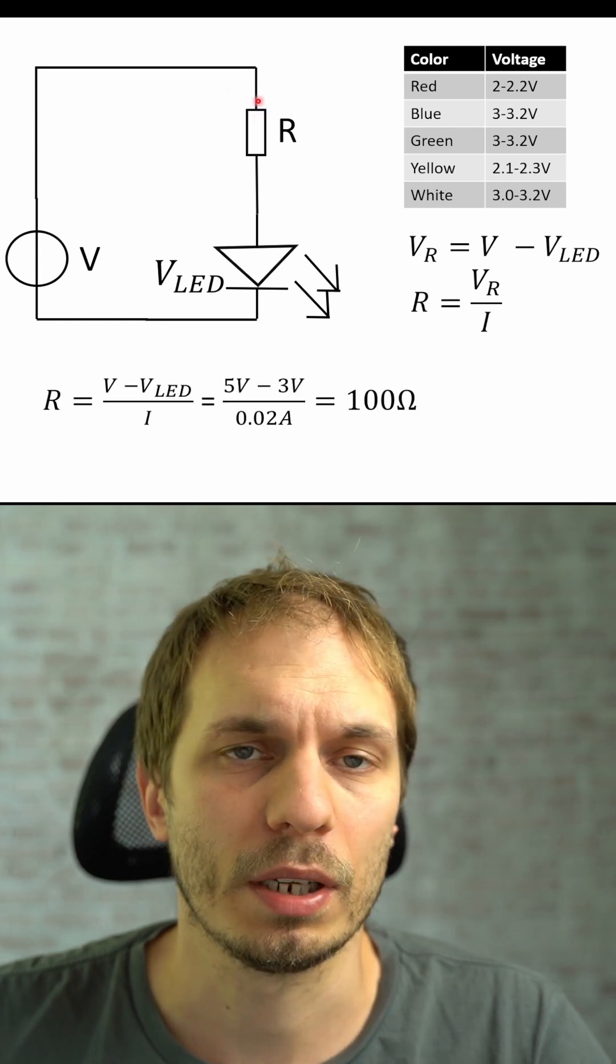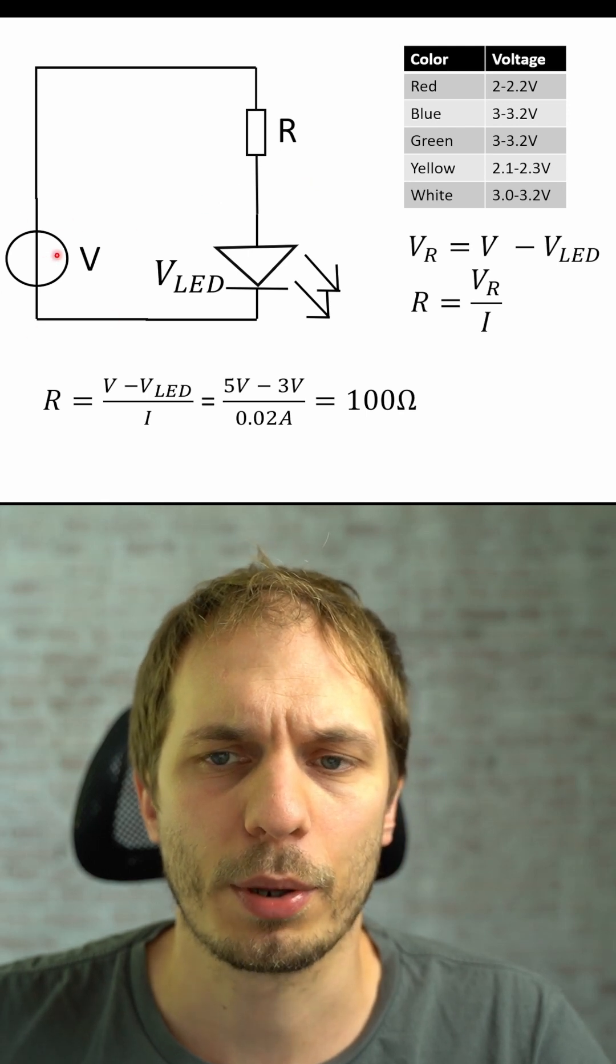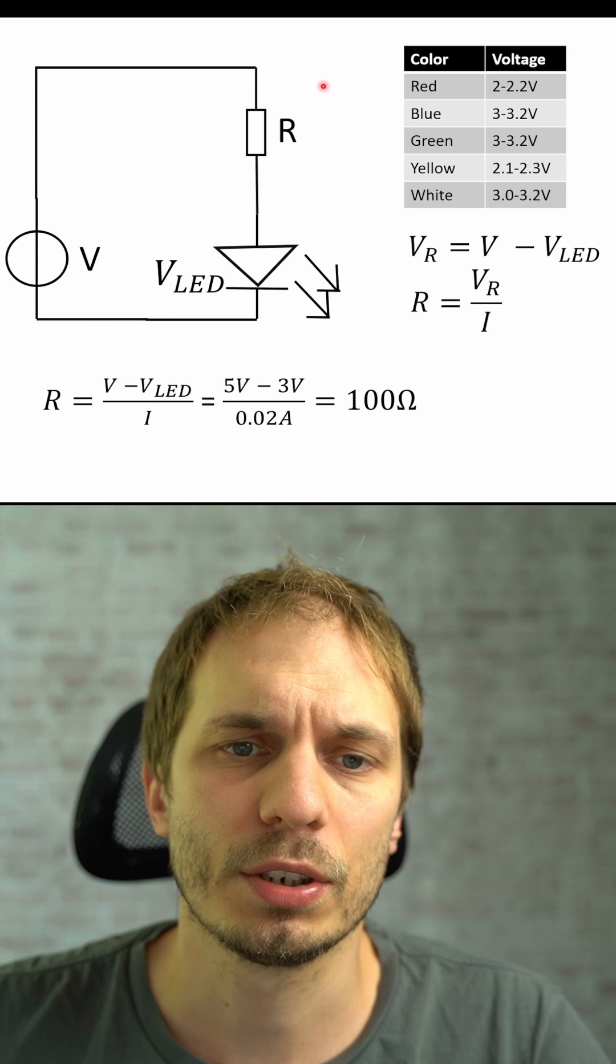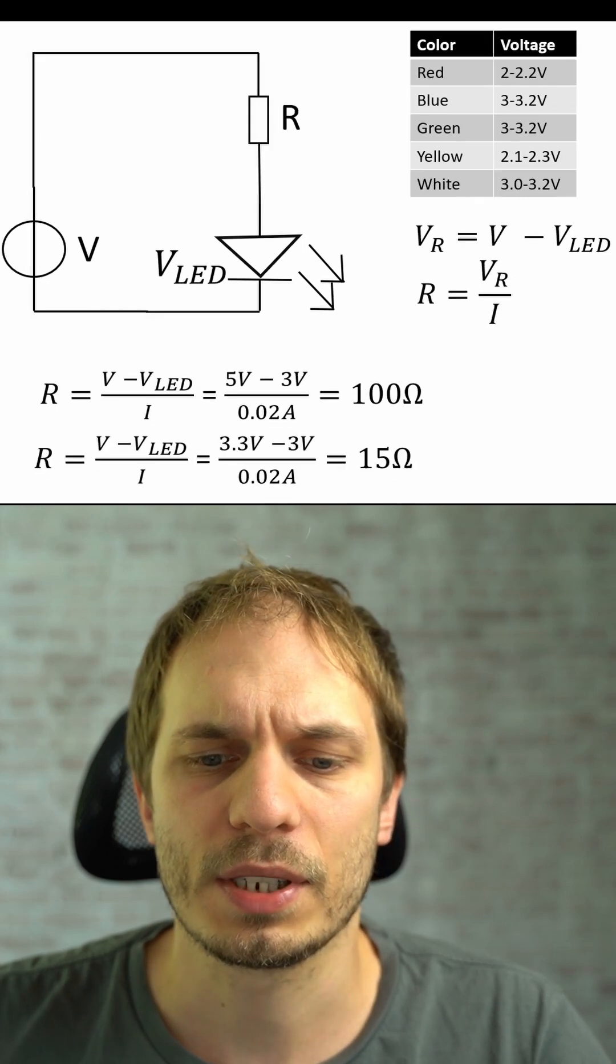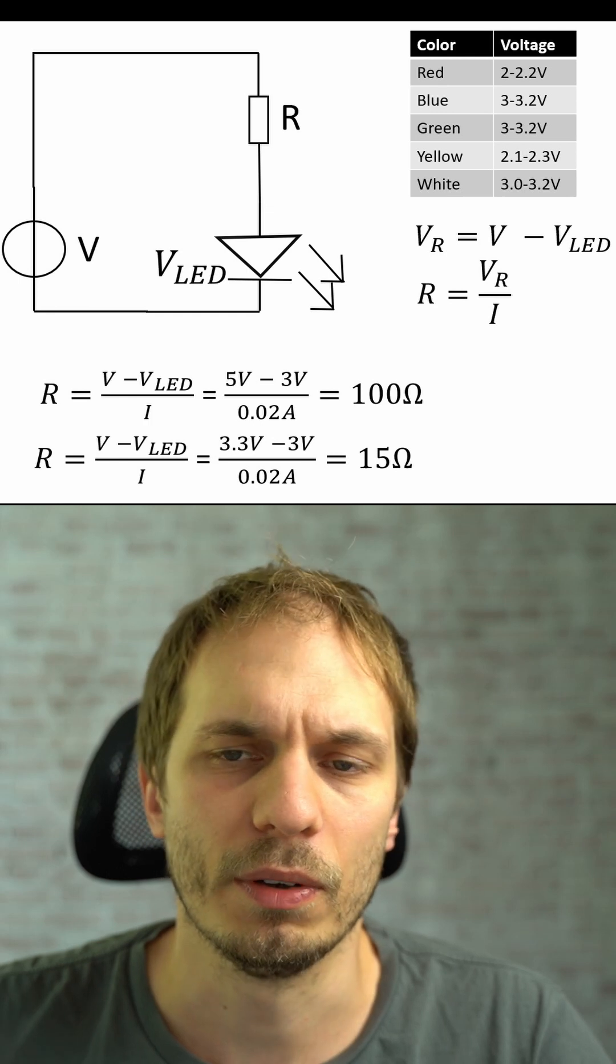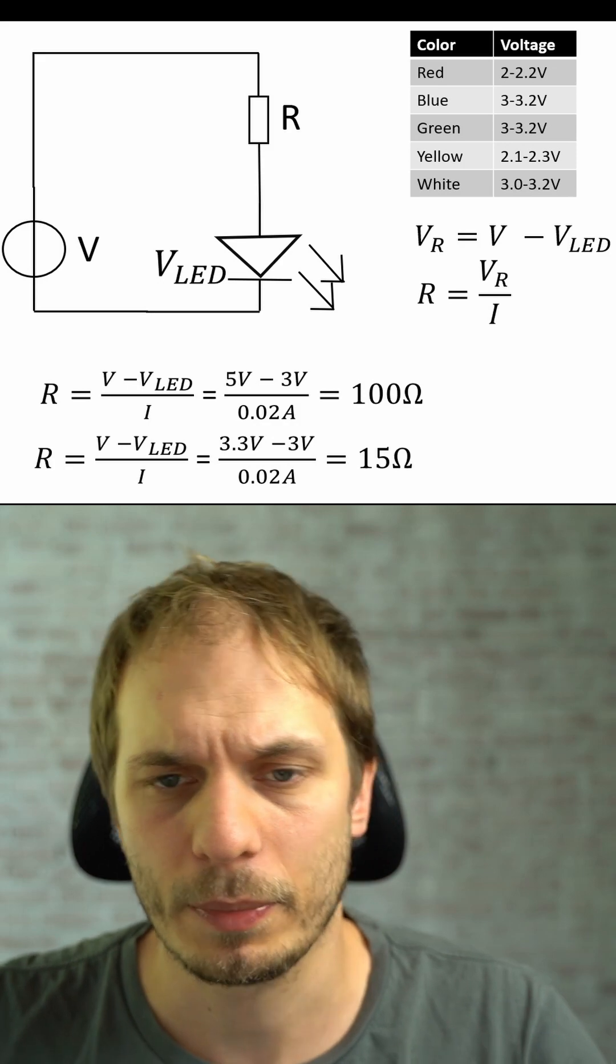As a second example, if we have 3.3 volt and the same LED, we have a voltage of 300 millivolt and this gives us a resistor of 15 ohm. So I hope this helps you and see you next time, goodbye.